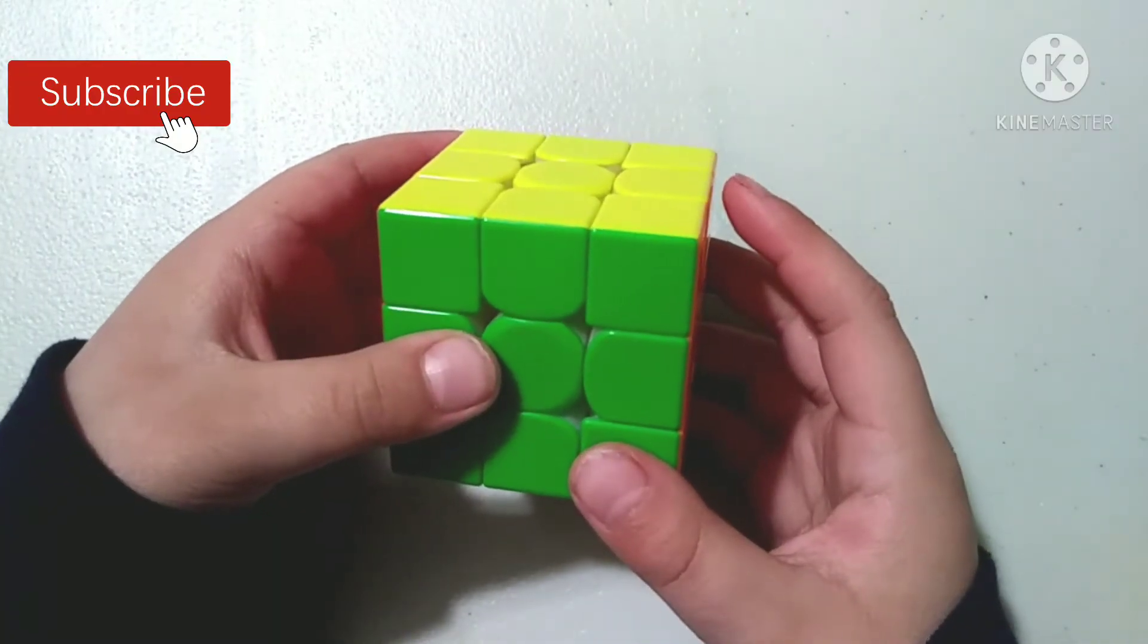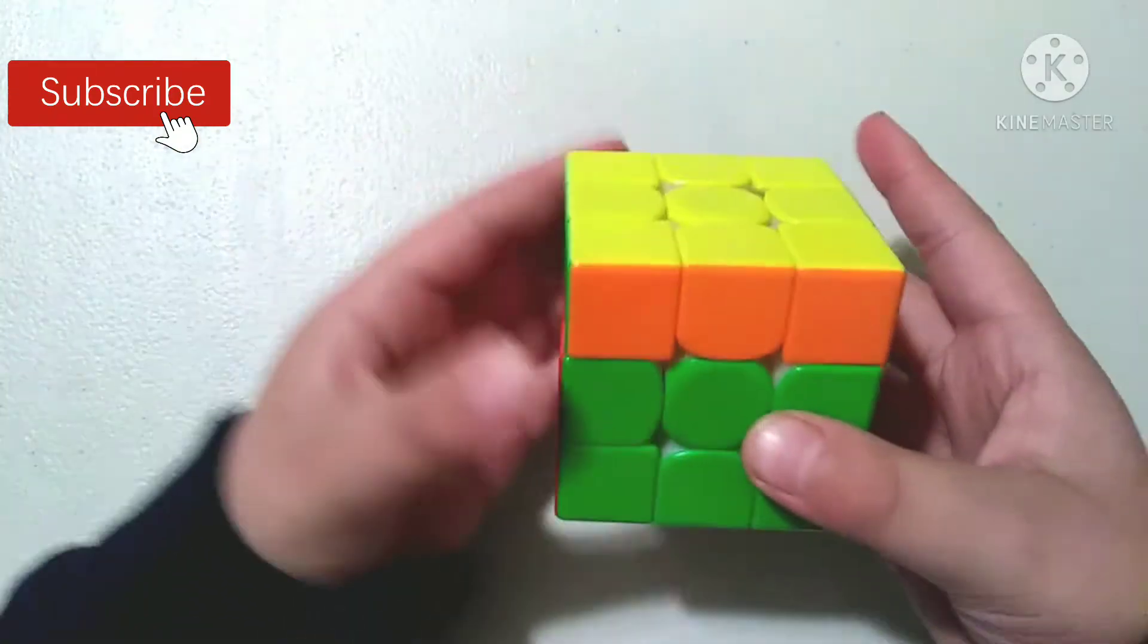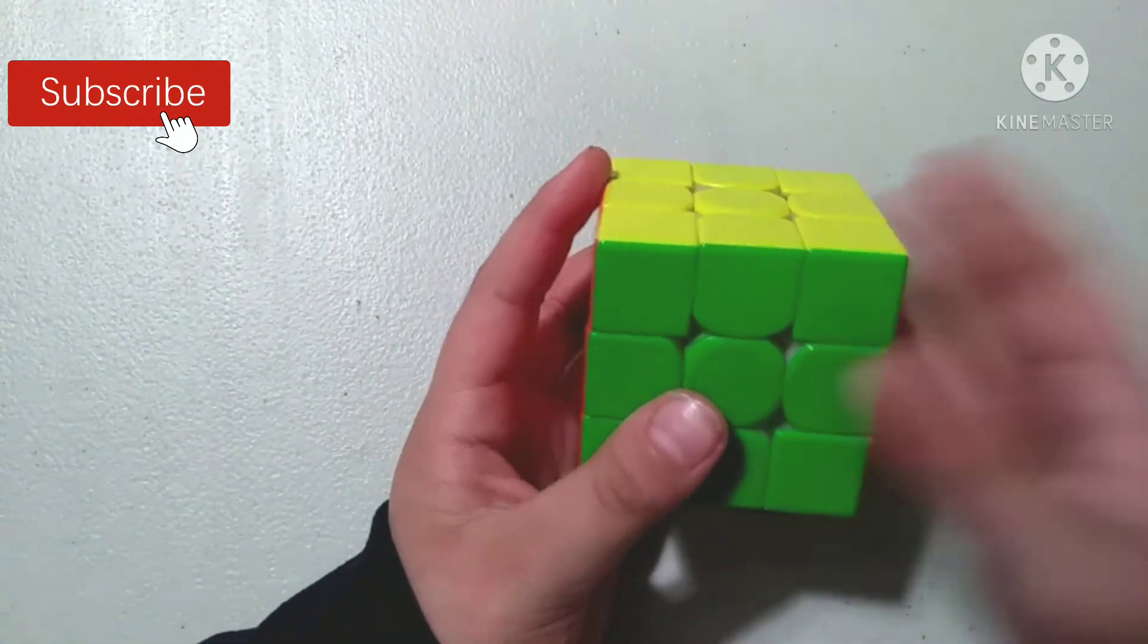My first tip is to learn finger tricks. Instead of doing U moves like this with your whole hand, you're going to start doing them like this with your index finger.